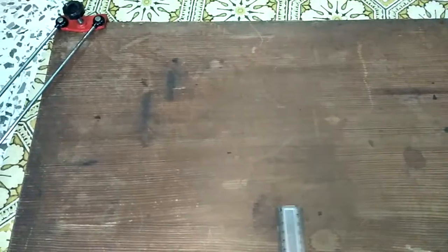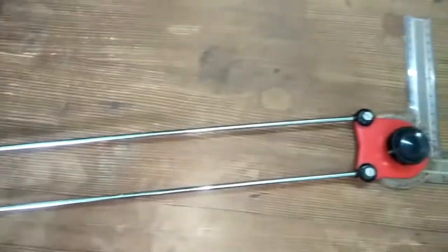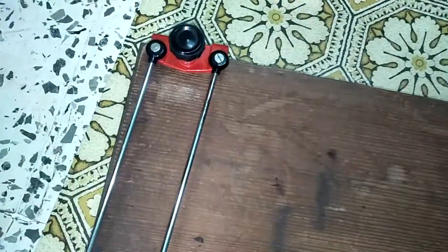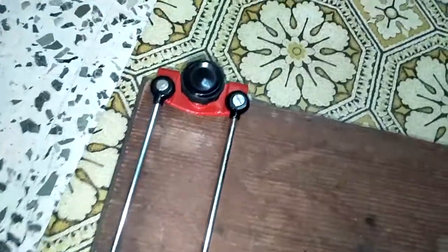Hello students, here you can see this is the mini drafter. You can have a look at this. This drafter is clamped at the top left corner of the drawing board.